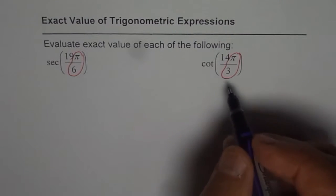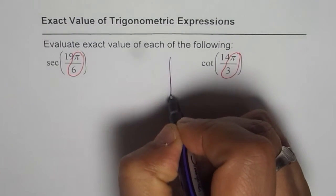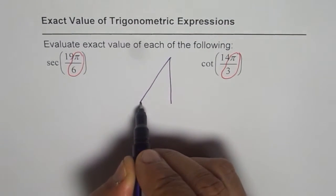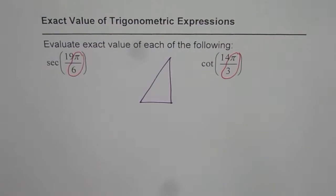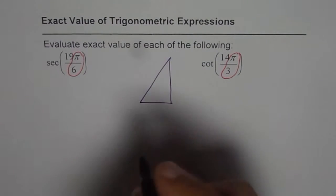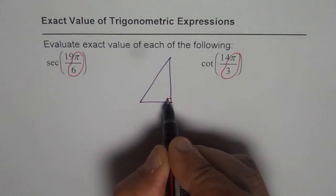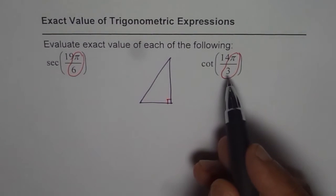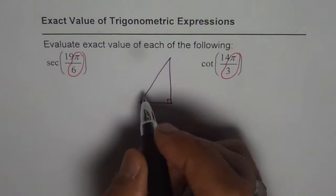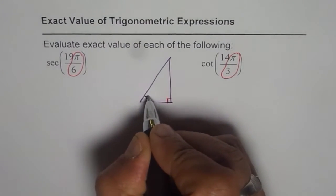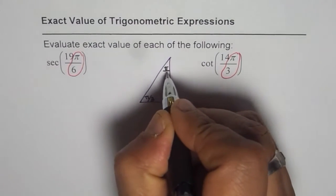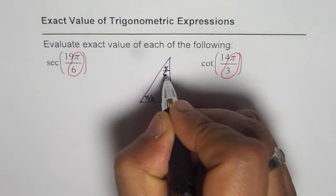So this special triangle which should help us in this case is 30, 60, 90. So let me sketch one 30, 60, 90 triangle. So this is 90 degrees for us. When we say 30, 60, 90 that is in degrees and now we are working in radians. 60 corresponds to π by 3, 30 corresponds to π by 6. 180 divided by 6 is 30 degrees.